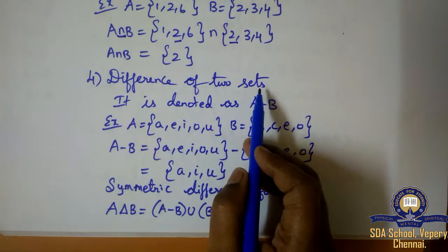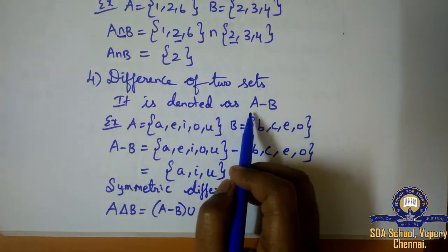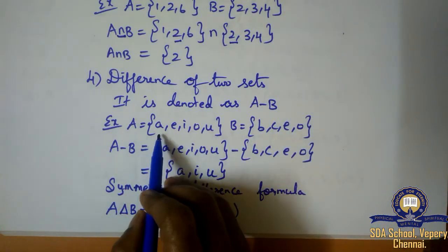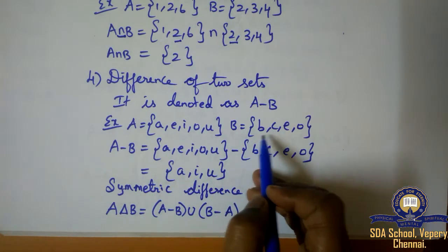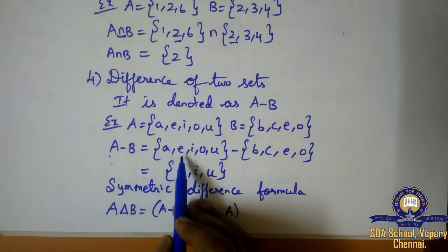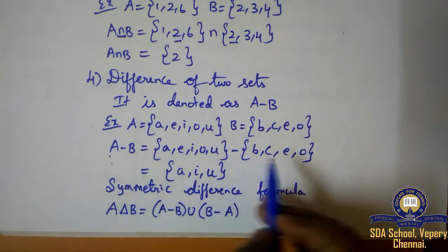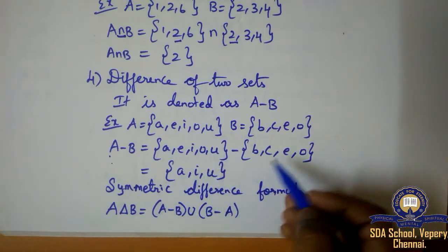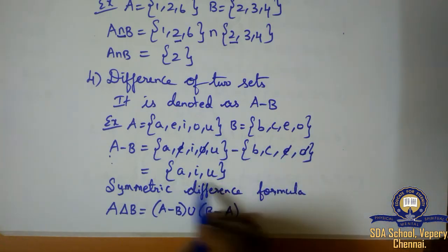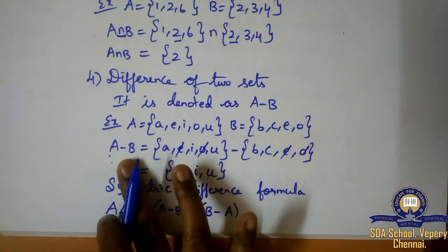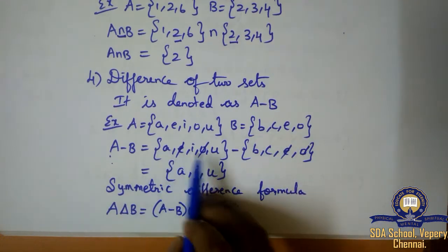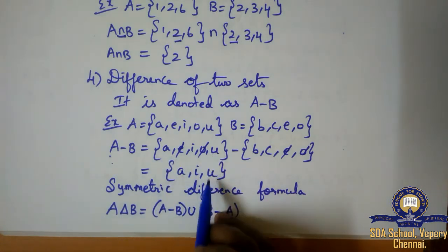Next is difference of two sets. Difference is denoted as A minus B. Example: A is equal to {A, E, I, O, U} and B is equal to {B, C, E, O}. A minus B — I have written A values: A, E, I, O, U minus B values: B, C, E, O. Minus means we cancel the common elements. E and O are common, so I cancel them. After cancelling, we write only the elements from A. The pending values from A are A, I, and U.